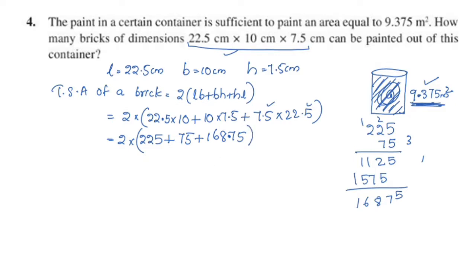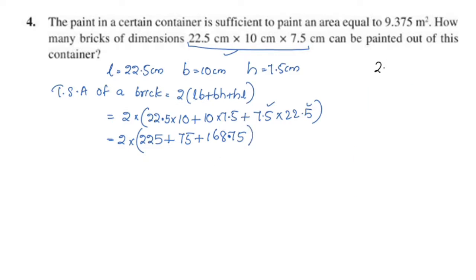Now we will add these values. 225 + 75 + 168.75 equals 468.75.